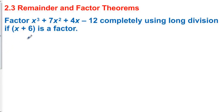This is section 2.3, remainder and factor theorems. Factor x to the third plus 7x squared plus 4x minus 12 completely using long division if x plus 6 is a factor.